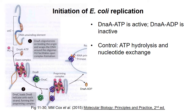Stimulated by the activity of the other proteins of the replication fork, DNAa hydrolyzes its ATP to ADP at some rate, and when the nucleotide is converted to ADP, the DNAa protein dissociates from its binding sites. In this ADP-bound form, DNAa is unable to initiate another round of replication. So the length of time between initiation events is controlled by the rate at which DNAa hydrolyzes ATP to ADP and the rate at which the ADP can be exchanged for ATP to reactivate the protein.